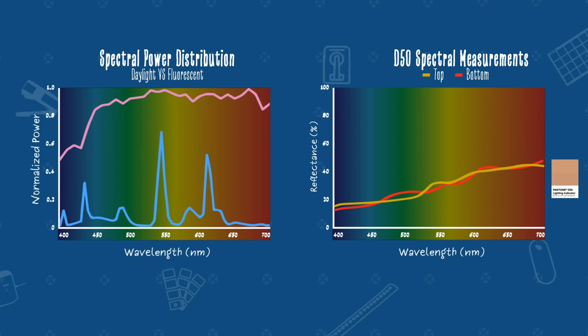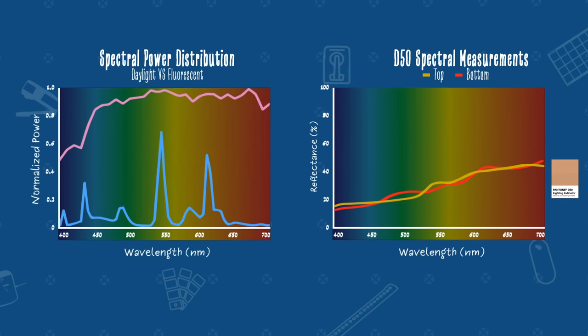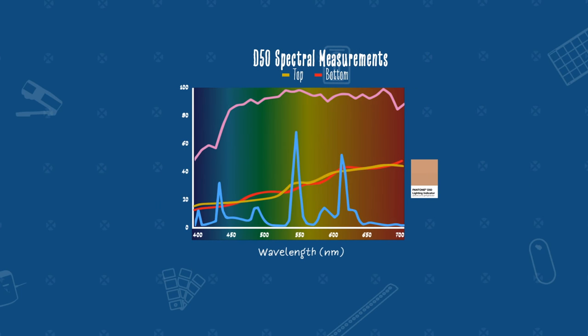So back to our metameric issue. Here we can see the spectral measurements of the top and bottom of the lighting indicator. They are definitely different. The color of the indicator can shift depending on where the wavelengths of the physical sample align with the spectral power distribution of the light source. So guess what happens when we match the two spectral curves? We get a match under every lighting condition.